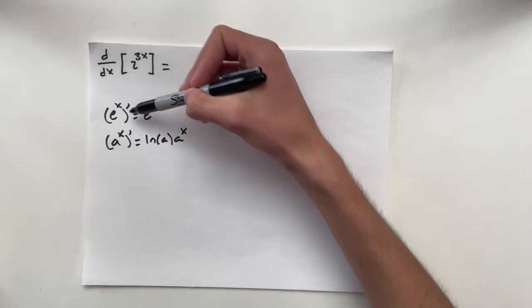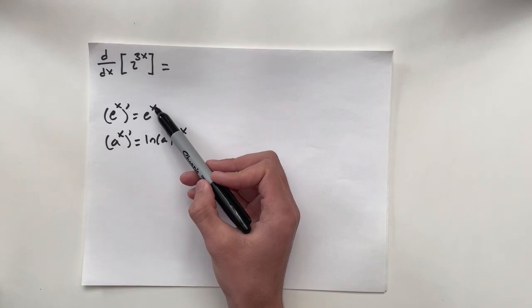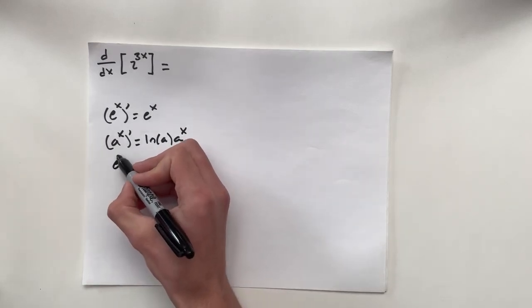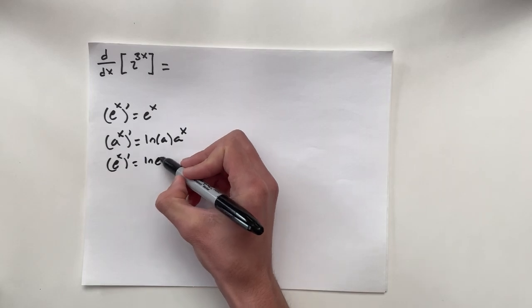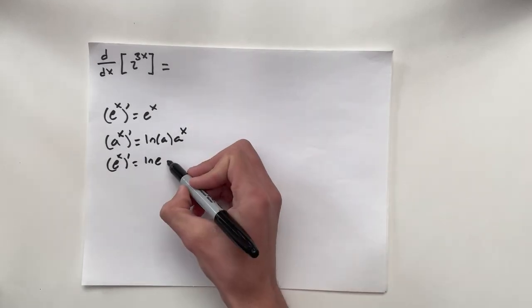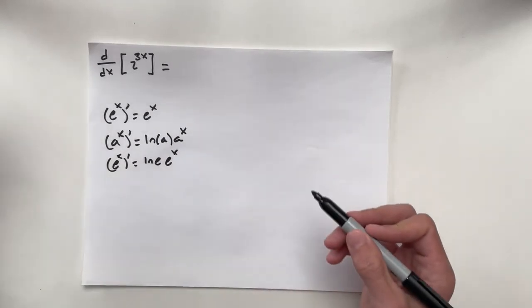And you can see why the derivative of e to the x is e to the x, because when we take that derivative, the natural log of e is simply just 1. Then you have e to the x. So that's what that comes into.